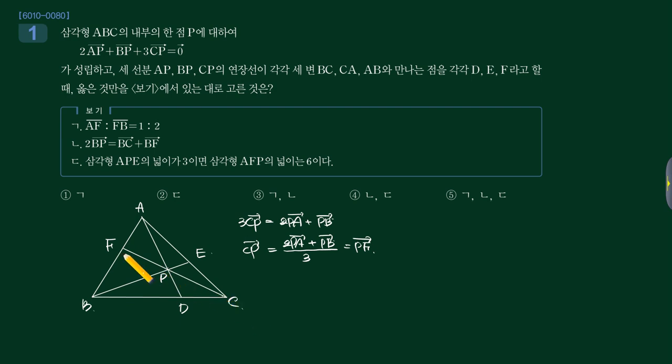CP랑 PF가 같아요도 중요하지만, 이 비를 생각을 해보면 A에서 1만큼 B에서 2만큼이 여기가 1대 2가 된다라는 사실도 알 수가 있겠죠. 그런데 이 1대 2라는 비가 저기 요 문제 다시 한번 적어보면.